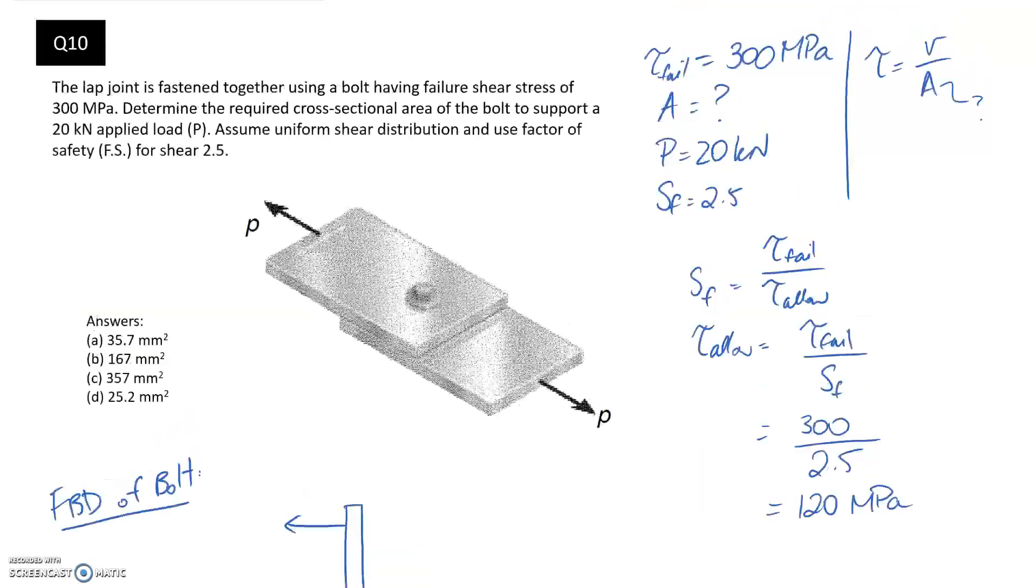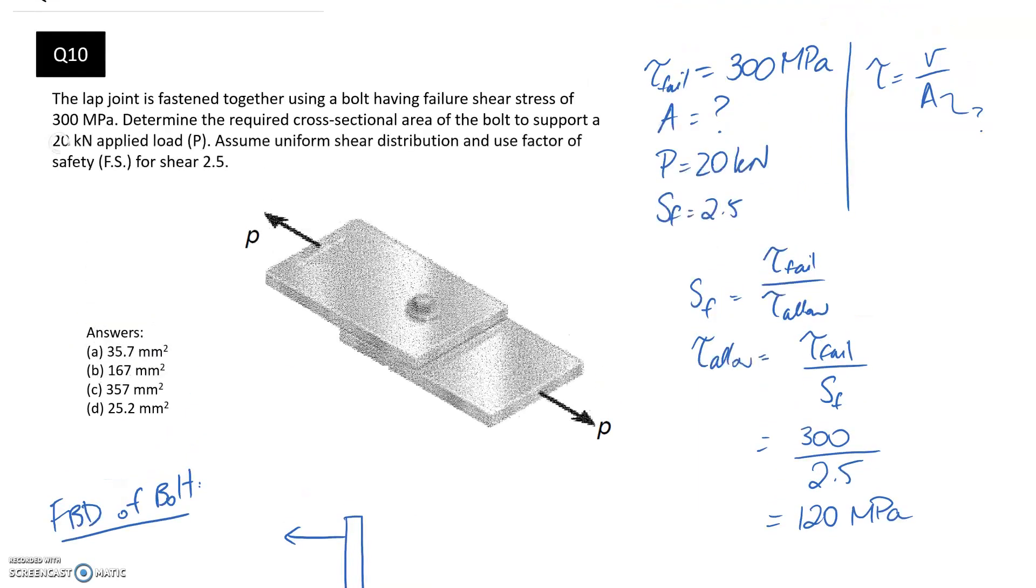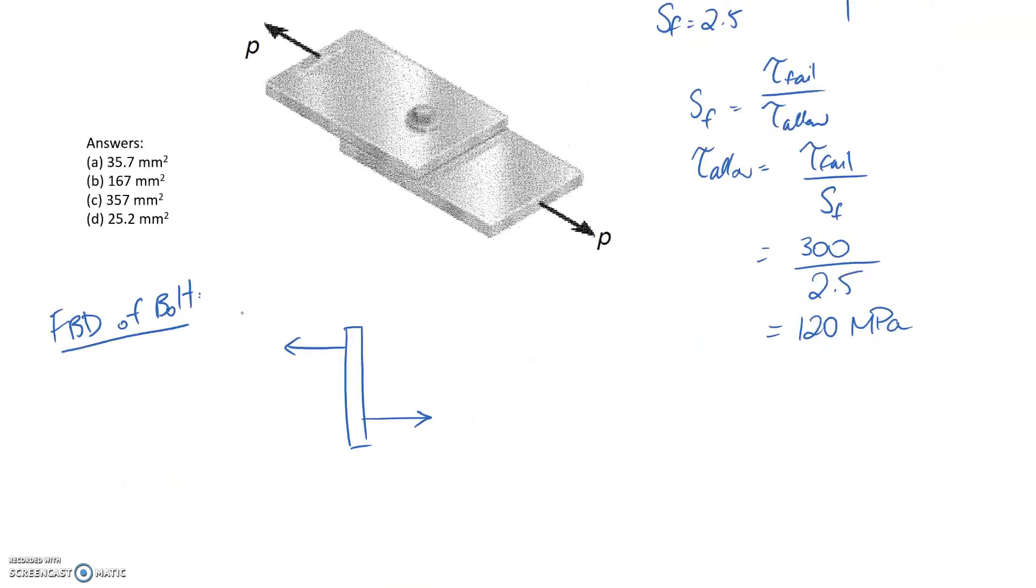So we were told the force that was applied to it was 20 kilonewtons. So we can pop those onto our diagram. And what we need to do is determine the internal shear force. So in order to do that, we want to cut through the material where we think the maximum shear is occurring, which is going to be in between here.